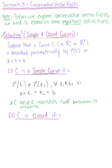We say that C is closed if vector R(a) is equal to vector R(b). This means that the initial and terminal points are the same, or simply, the endpoints are the same.